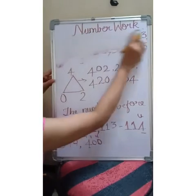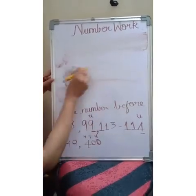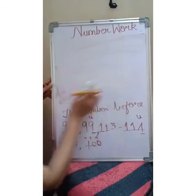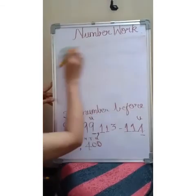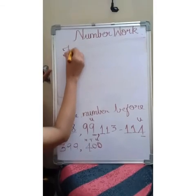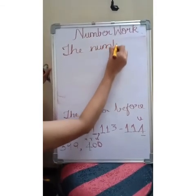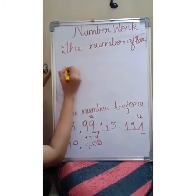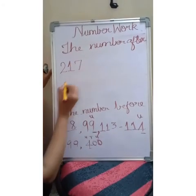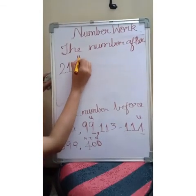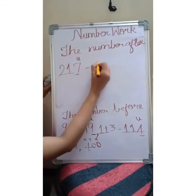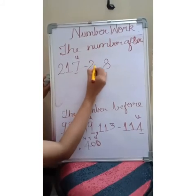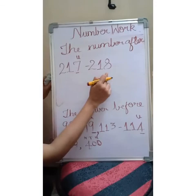Next we are going to see the number after — how to write the number after every digit number. Let's take an example: two hundred and seventy. What is the number in the tens place? It is seven. So after seven, what is the number? After seven is eight. Your number after two hundred and seventy is two hundred and eighty.